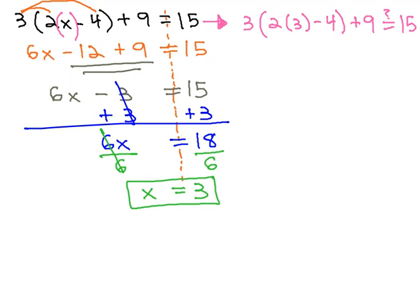We need to do the order of operations on the left side, and hopefully we'll end up with 15 for an answer. Inside the parentheses, we multiply first to get 3 times 6, minus 4, plus 9. Hopefully, that will be 15.